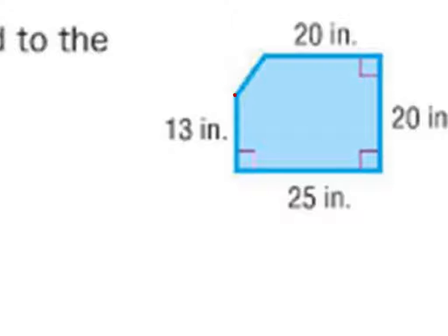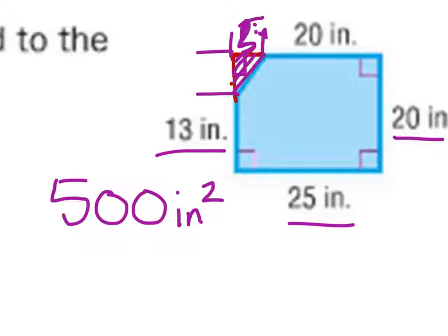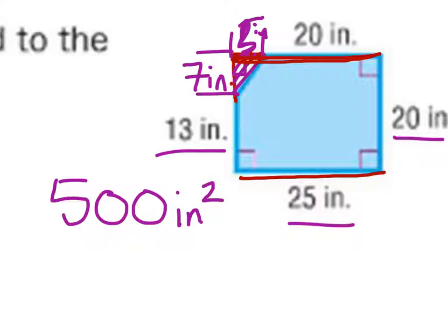We're going to look at this as though it's a full rectangle. If that missing part were there, we wouldn't even worry about the 13 yet. Take 25 times 20 — if it was a full rectangle, we would have 500 square inches. But this triangle actually is not there. We need a right angle because it is a rectangle, and we need the altitude and the base of the triangle. This length is 25, but this side only shows 20, so 5 inches are missing. And this other side is 20 inches, but it only shows 13, so 7 of the inches are missing. That gives us a base of 7 and a height of 5.